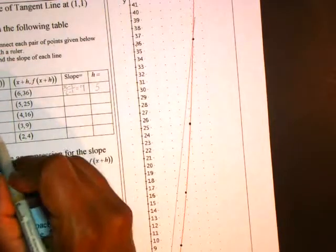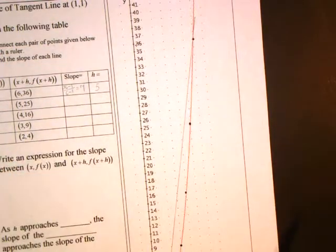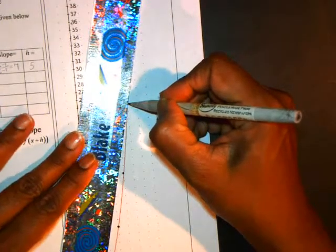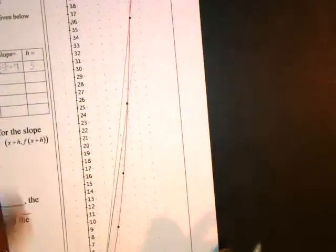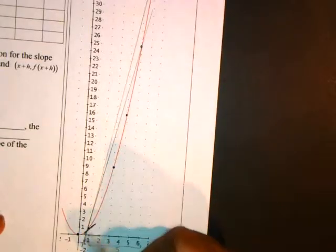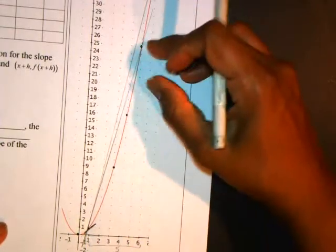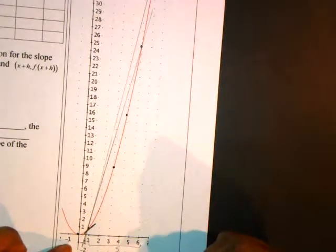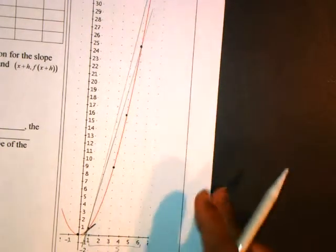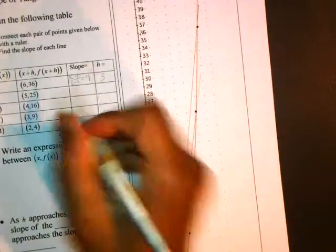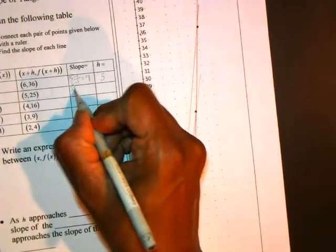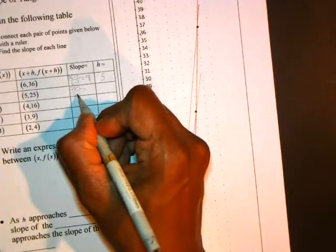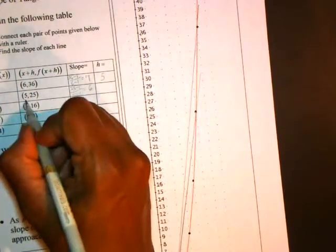Alright, let's do it again, connecting the point 1, 1 with 5, 25. So 5 comma 25 is there. We'll connect it and we get a different line. So we're trying to get as close to the tangent line as possible by getting these other lines, we call them secant lines, you know, as close and close to the tangent line as possible. So back to this table to find the slope. Change in y, 25 minus 1 over change in x, 5 minus 1, which is 24 over 4, which is 6. And this time the x's were 4 units apart.